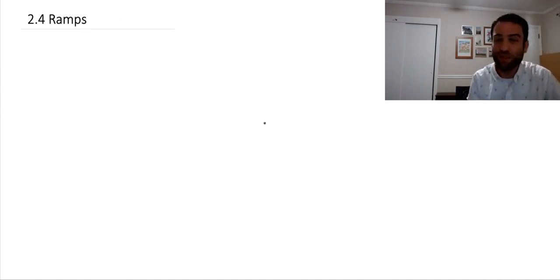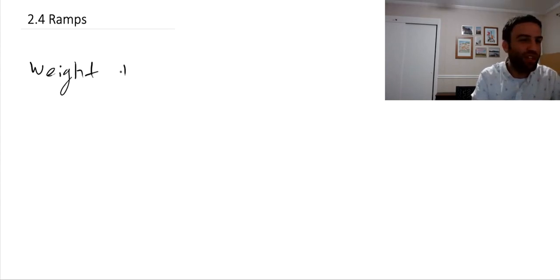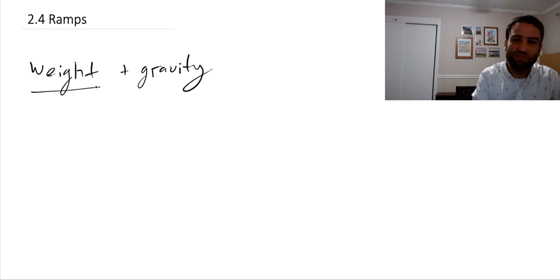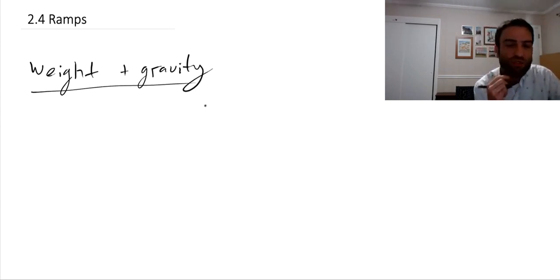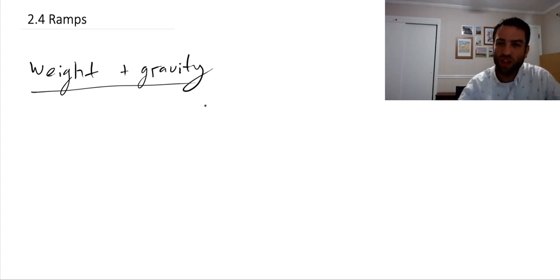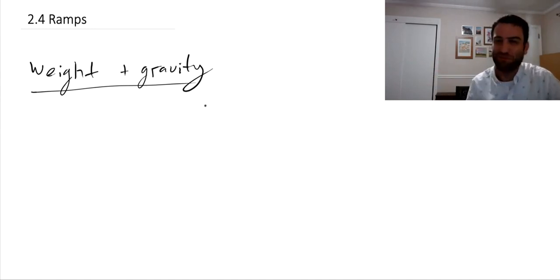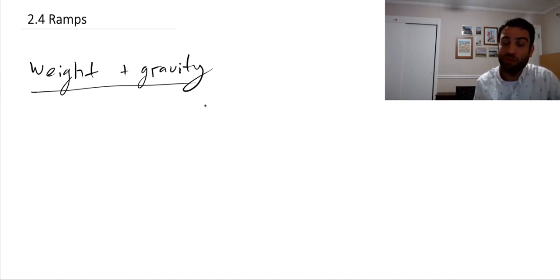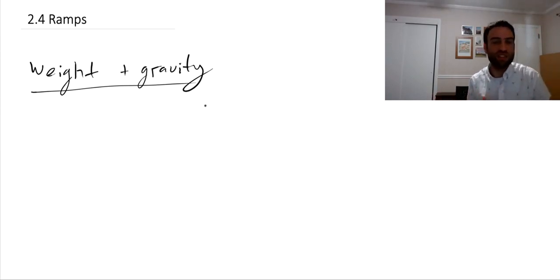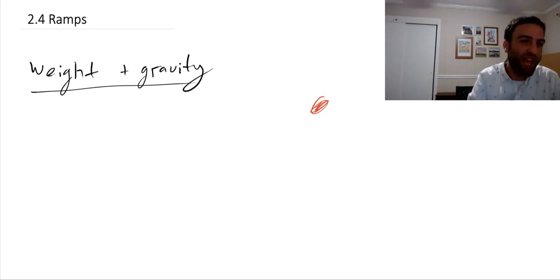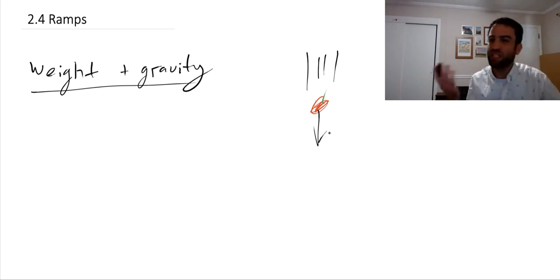We're going to start by thinking about weight and gravity, contrasting two situations. An object's weight is the force with which the Earth's gravitational field is trying to pull that object towards the Earth's center. When an object is in freefall, that force causes an acceleration. So if we have our canonical apple with its tiny green stem, there's a force of gravity acting on it causing it to accelerate downwards.